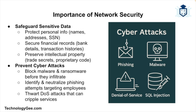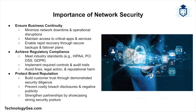Then there is the prevention of cyber attacks — effective network security measures help prevent various cyber attacks including malware, ransomware, phishing, and denial of service attacks. Then you have business continuity — network security ensures the uninterrupted operation of business activities by protecting network infrastructure from disruptions and downtime. You have compliance with regulations — many industries are subject to regulatory requirements that mandate specific security measures, and compliance is essential to avoid legal penalties and reputational damage. And then there is the protection of brand reputation — a security breach can severely damage an organization's reputation, so implementing robust security measures helps build trust with customers and partners.